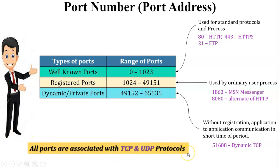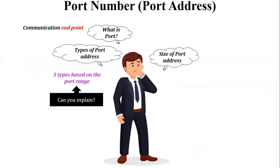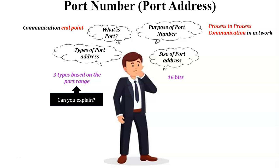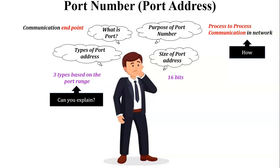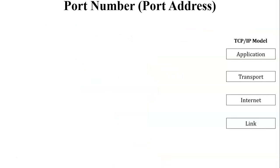The third type is dynamic or private ports, with a range of 49152 to 65535. Dynamic ports are used without registration for application-to-application communication for short time periods. An example dynamic TCP port is 51688. Port addresses are assigned at the transport layer, so all ports are associated with TCP and UDP protocols, which are transport layer protocols. The size of a port address is 16 bits. The purpose of the port number is process-to-process communication in the network.